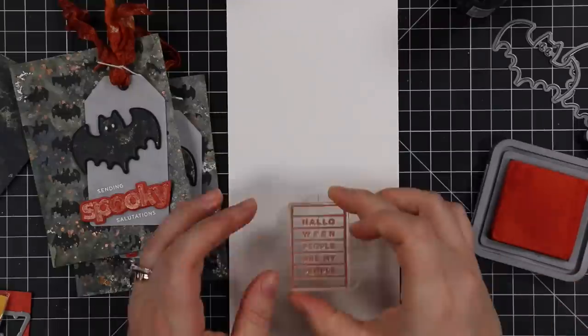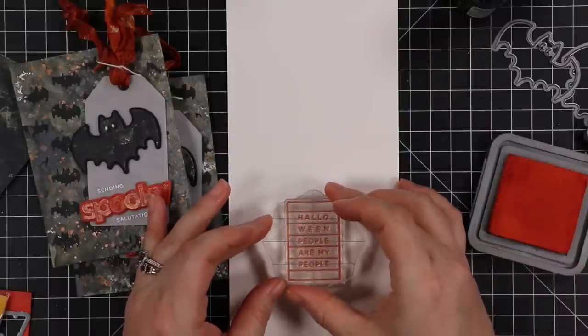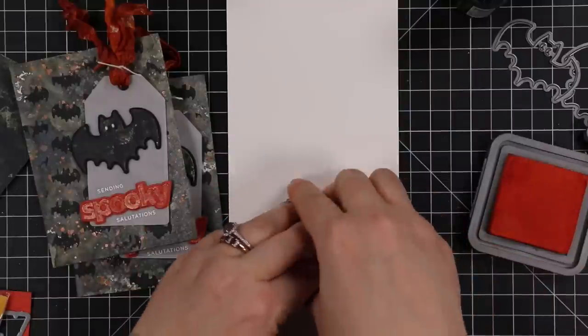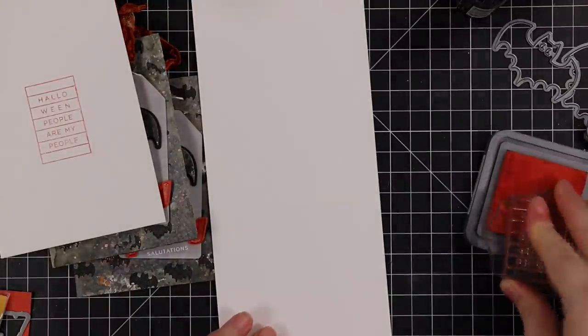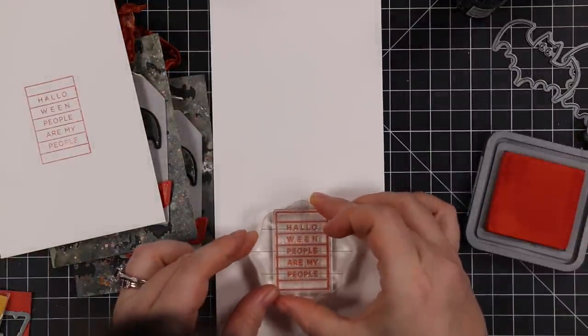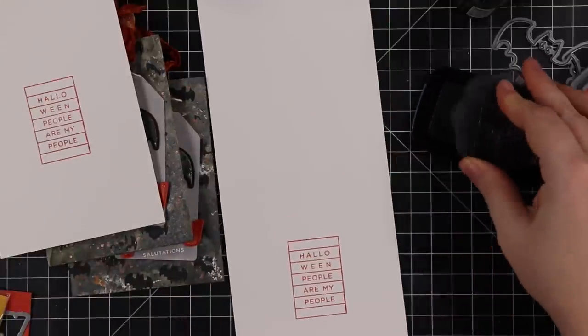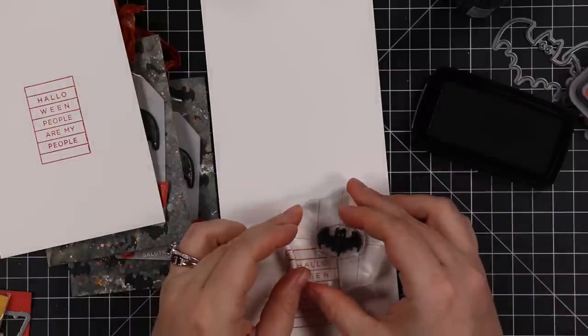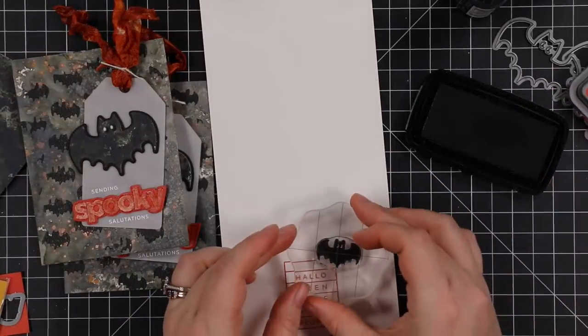On the insides of these cards I'm going to stamp another sentiment from the Halloween People set and I inked that up with that crackling campfire distress oxide ink. I stamped that onto the inside of both these cards. Then I took the bat image from that same stamp set that matches with all of this and I'm going to stamp that with Versafine Clair Nocturne ink, just to tie everything together. I've got that nice deep orange and then my little bat.